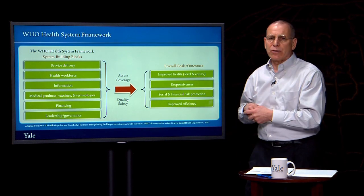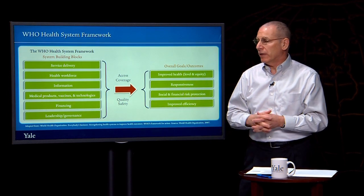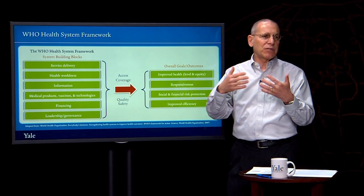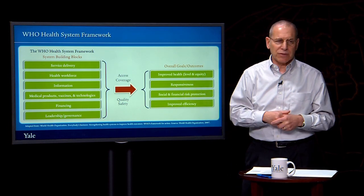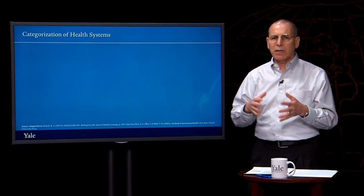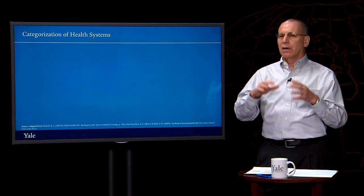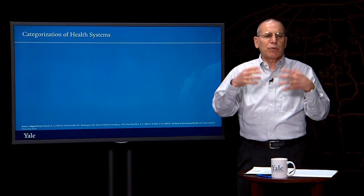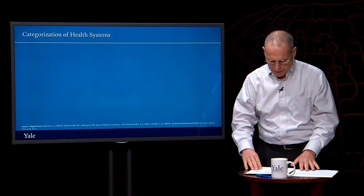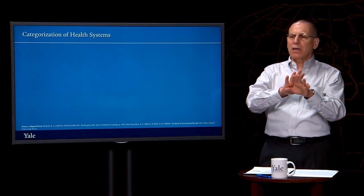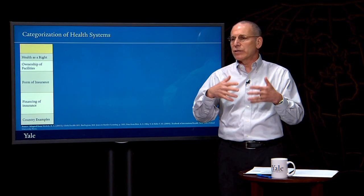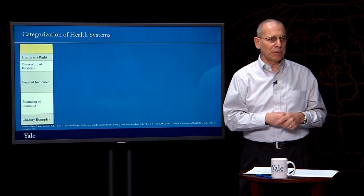I want to encourage you, as you think about different health systems including perhaps the one in the country in which you live, to keep this framework in mind. Now let's look at the way in which health systems are organized. It's really important to understand that every country in principle has a unique approach to health, and every country has taken account of its culture, history, background, and social mores in designing its health system. Health systems can be categorized in many different ways, and I'm going to suggest a rather simplified approach to thinking about how different health systems are organized.